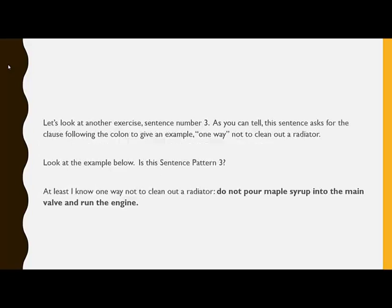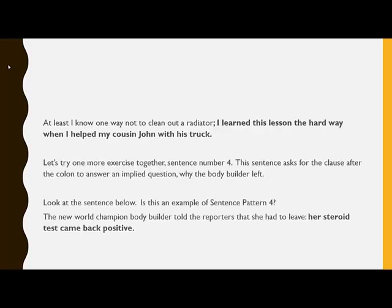Now let's look at another exercise, Sentence Number 3. As you can tell, this sentence asks for the clause following the colon to give an example of one way not to clean out a radiator. Look at the example below. Is this Sentence Pattern 3? Yes. Notice that after the colon, 'do not pour maple syrup into the main valve and run the engine' is giving an example of one way not to clean out a radiator. The first sentence is a good example of how to use a semicolon — it's closely related, it's just not explaining that one way.